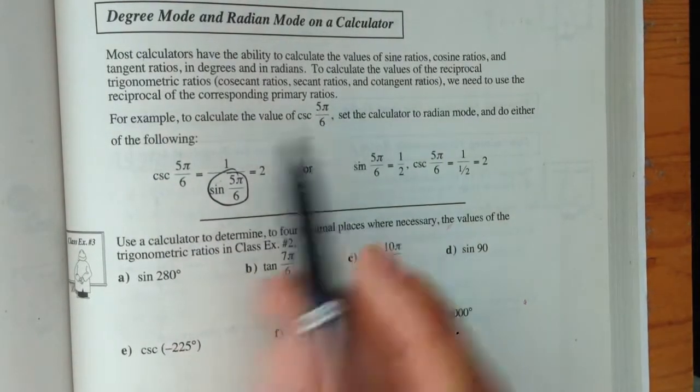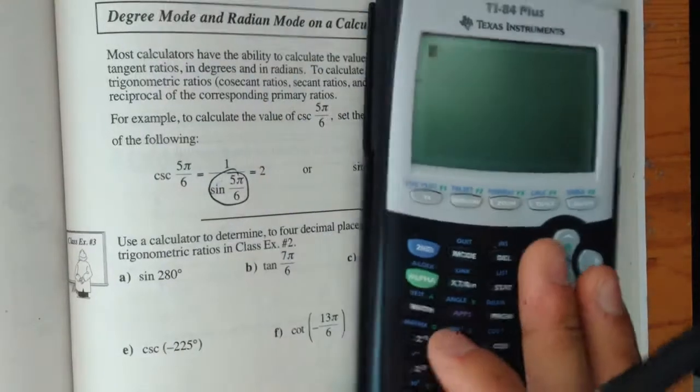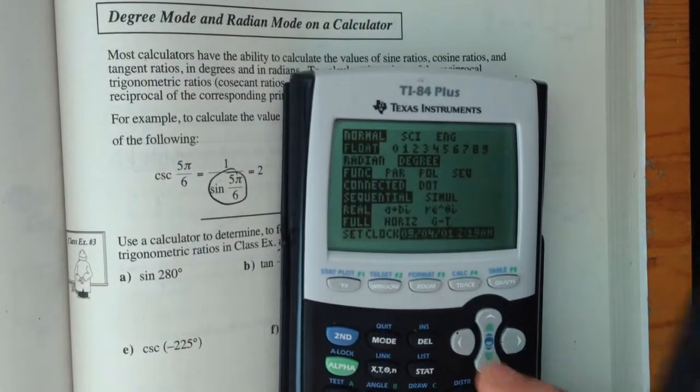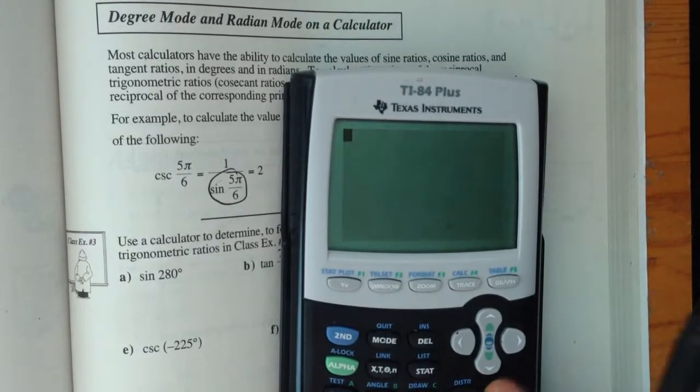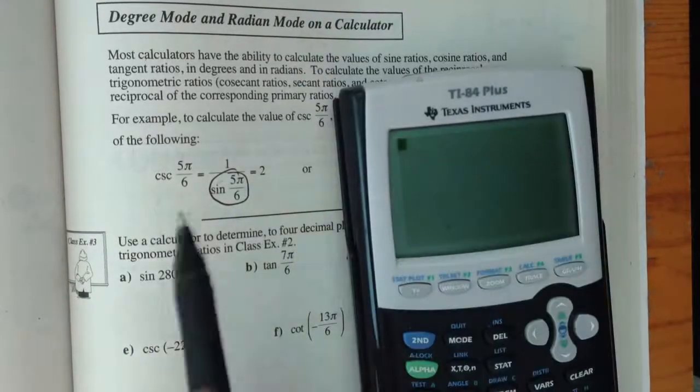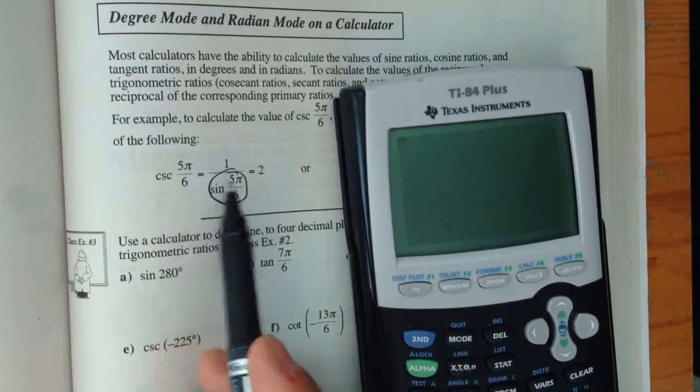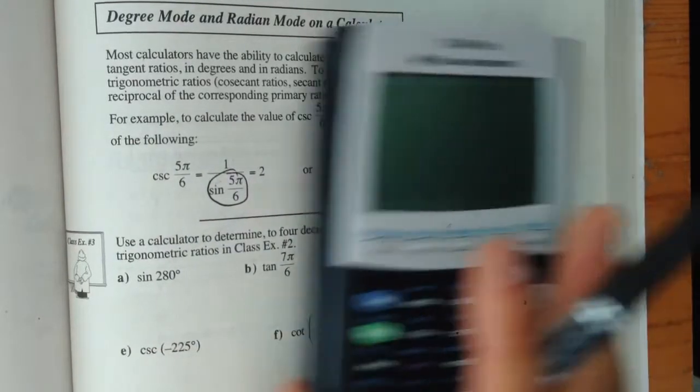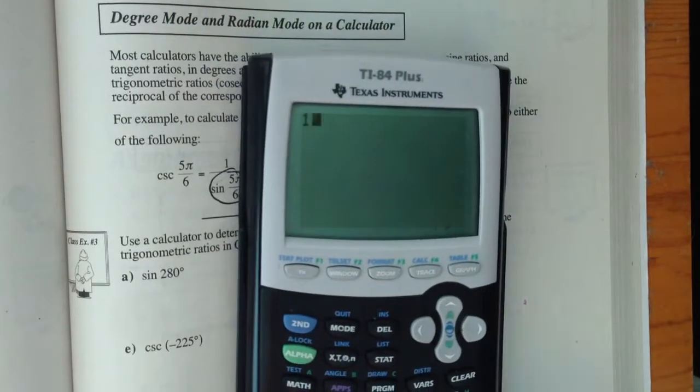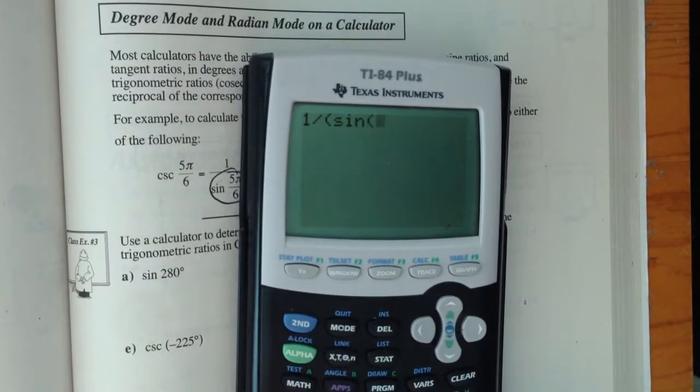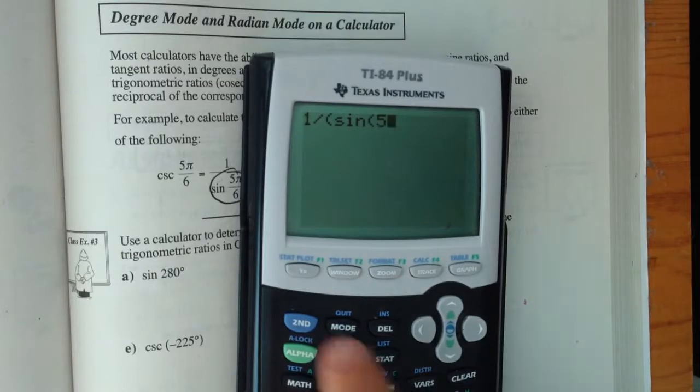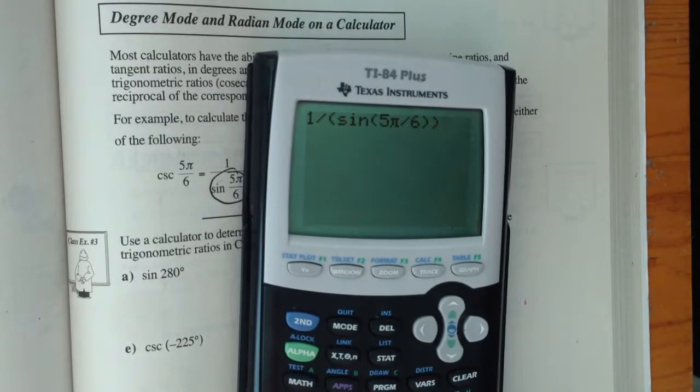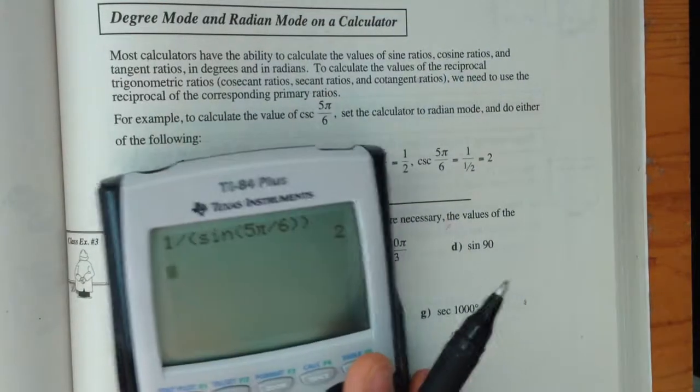If you're looking for the cosecant of 5π over 6, then what you would have to do is, first of all, go to mode, make sure you're in radians if you're using radians. Then you would have to type in cosecant 5π over 6, or 1, since there's no cosecant button, you'd have to go 1 divided by sine times 5π divided by 6.